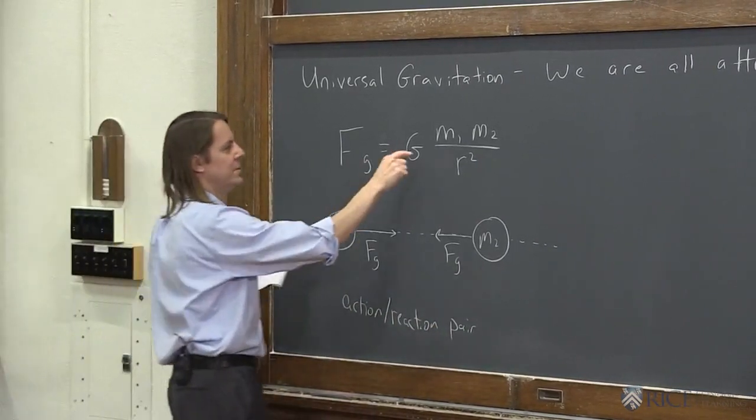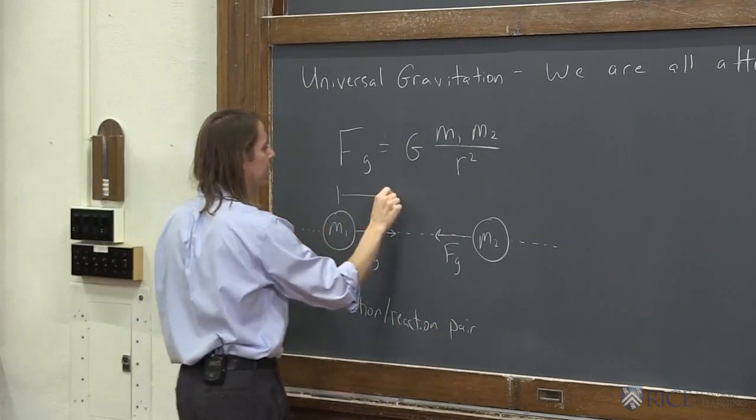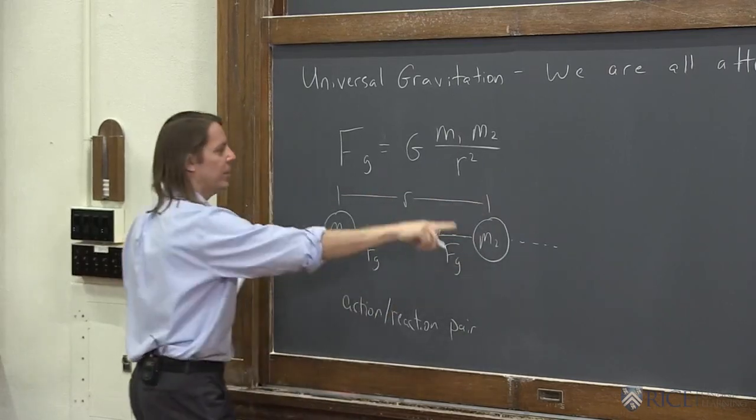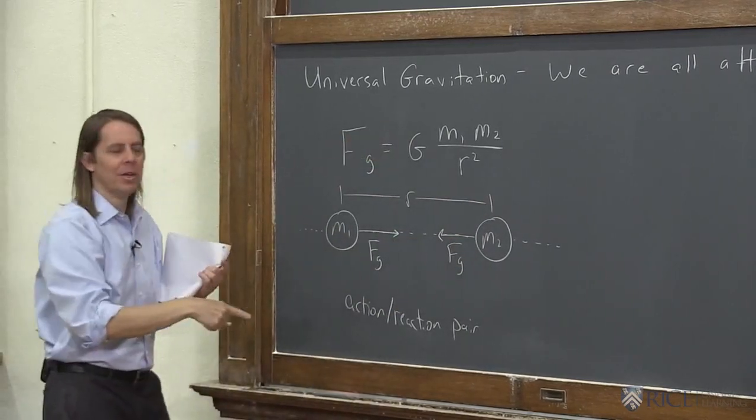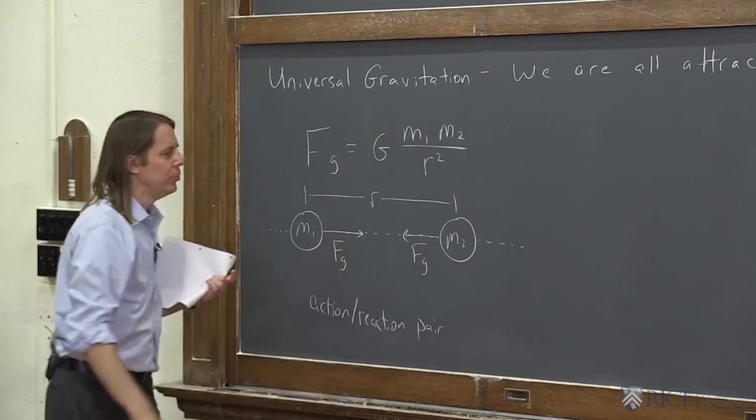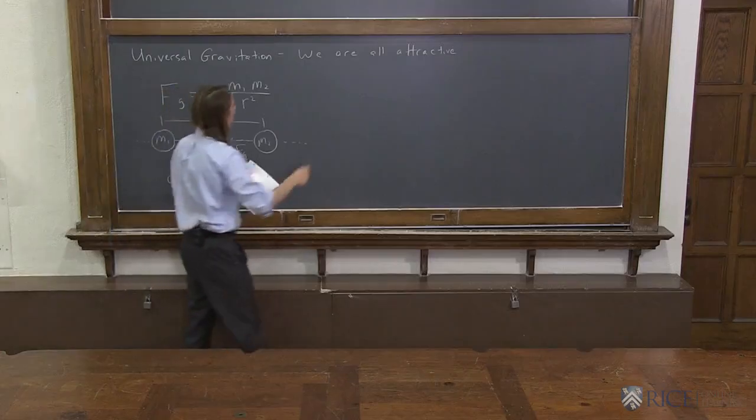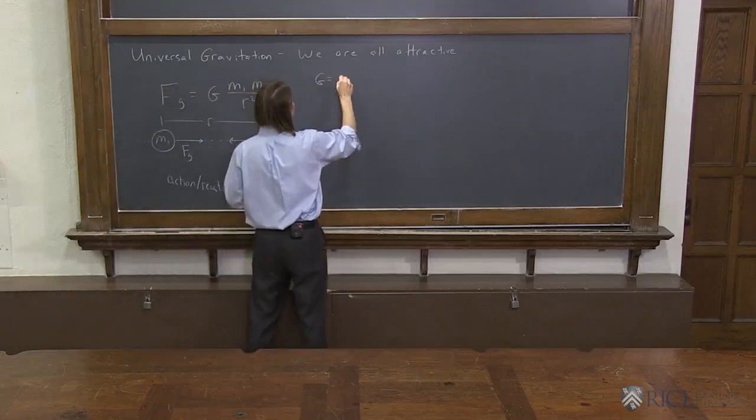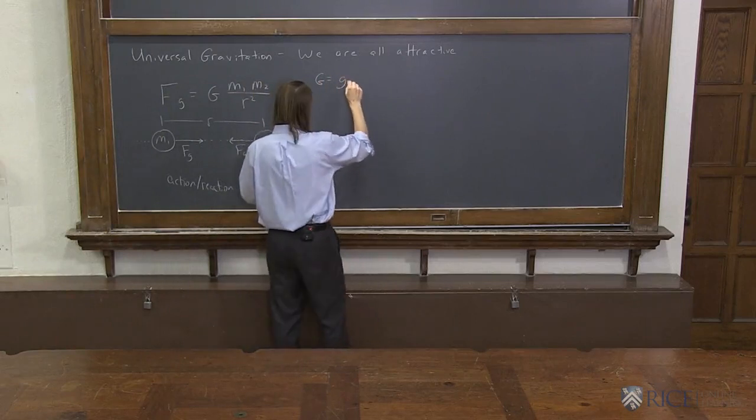The force of this one, G m_1 m_2 over r squared, where r is the separation. The force on this one, G m_1 m_2 over r squared. They both depend on m_1 m_2, so they both get the same magnitude.